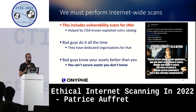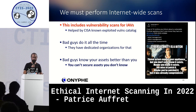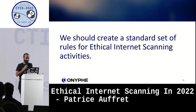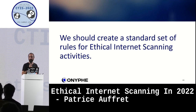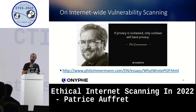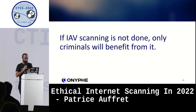Bad guys know your assets better than you because there's financial incentive — if they find the entry point, they win millions. In the security industry, if you protect your network you just get your salary. It's not the same ratio. And you can't secure assets you don't know, so you have to scan your networks — the ethical way. We should create a standard set of rules for ethical internet scanning activities, maybe an RFC. Paraphrasing Phil Zimmermann: if privacy is outlawed, only outlaws will have privacy. I would say: if AIV scanning is not done ethically, only criminals will benefit from it. Thank you.